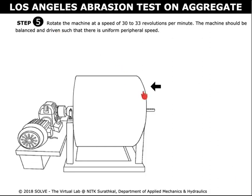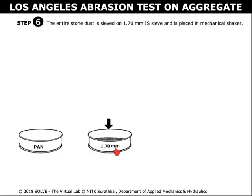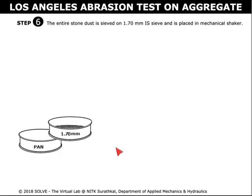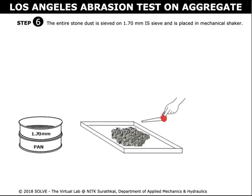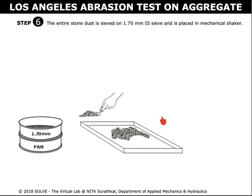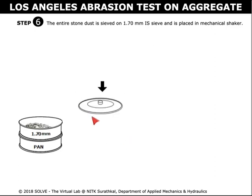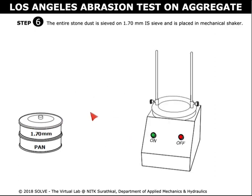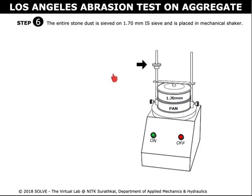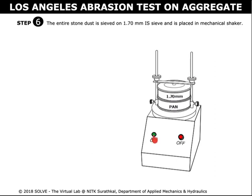Click here to remove the cover and transfer the material to the tray. Click on the 1.7 mm sieve to place it in the pan. Click on the tray to transfer the coarse aggregates into the sieve. Click on the lid to close it. Click on the sieve to be placed in the mechanical shaker, lock it in position, and switch on the mechanical shaker and let it sieve.